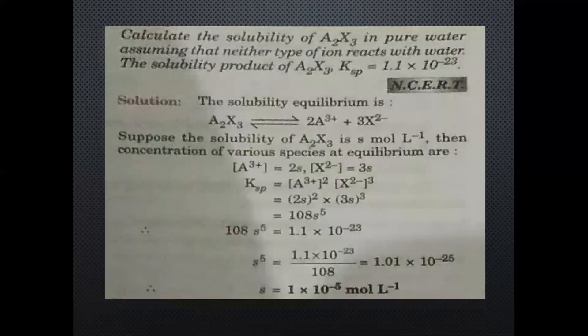Next question: Calculate the solubility of A₂X₃ type compound in pure water, assuming neither type of ion reacts with water. The solubility product of A₂X₃ is given. First we write and balance the reaction, then dissolve it in water so it breaks into its ions.